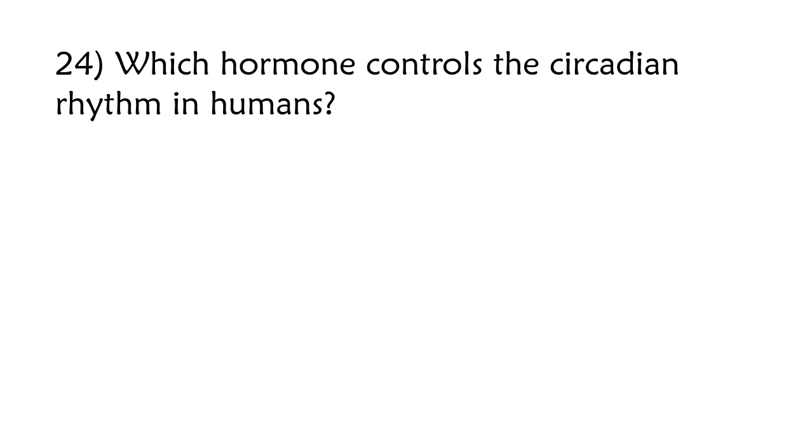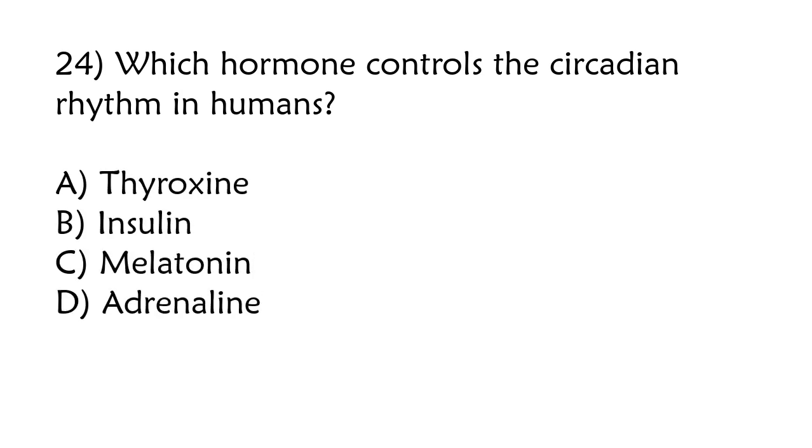Which hormone controls the circadian rhythms in humans? Thyroxine, insulin, melatonin, adrenaline. The correct answer is option C, melatonin.